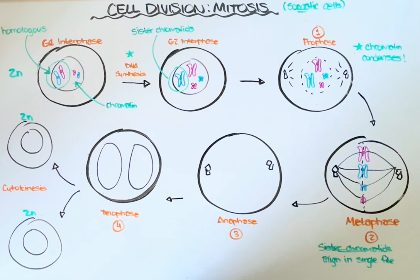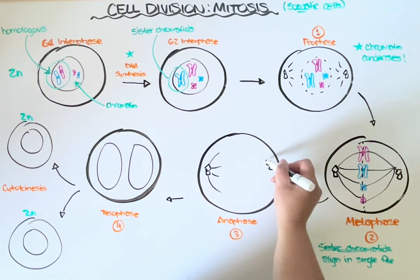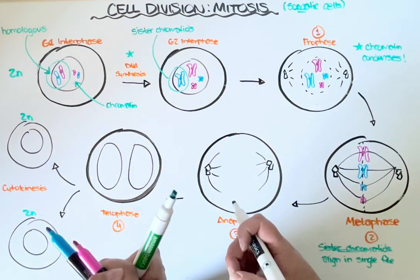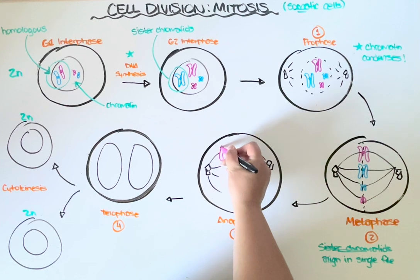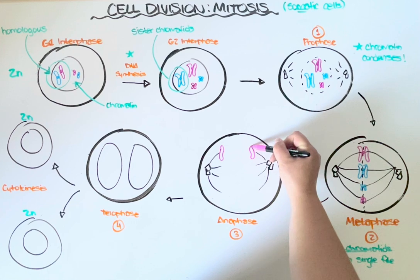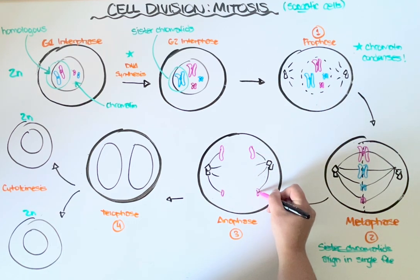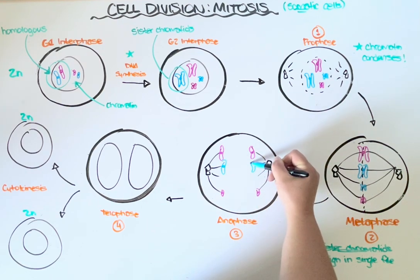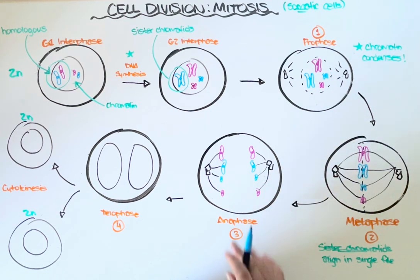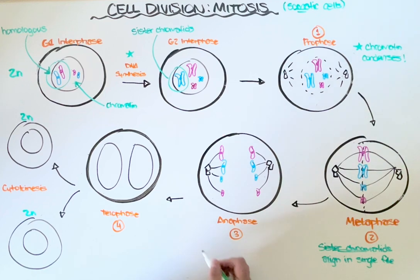Then the cell enters stage 3 of mitosis, which is anaphase. During anaphase, those spindle fibers attached to the centromeres of each chromosome start to shorten, kind of like a fishing rod, and pull those sister chromatids apart. So this maternal chromatid will get pulled to one pole of the cell, whereas the other maternal chromatid will get pulled to the opposite pole. The vocab is really important to get right here — sister chromatids separate during anaphase of mitosis.